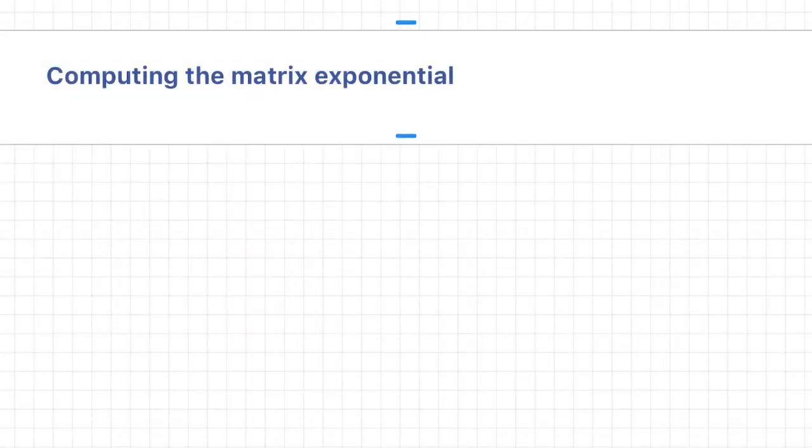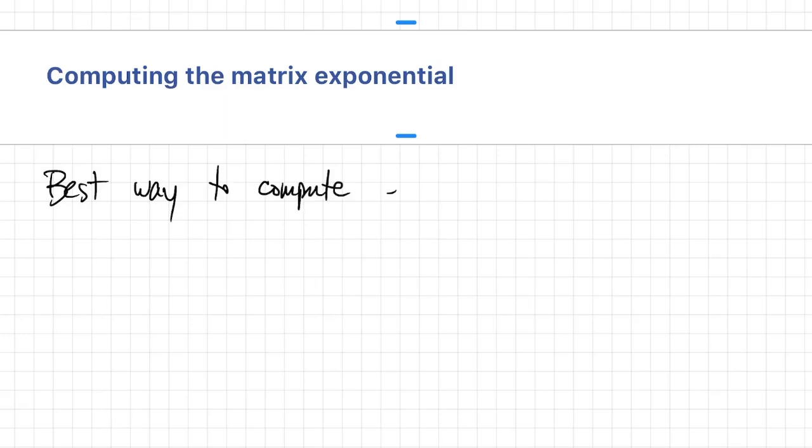So that's all great, but how do we actually get our hands on a matrix exponential? If you're going to write this matrix A, it depends on whether A is what we call defective.